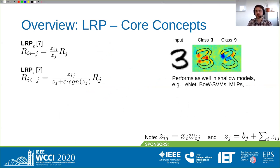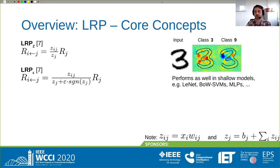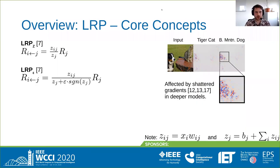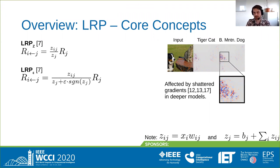The C rule has seen success in shallower models such as LeNet-like architectures, multi-layer perceptrons, or support vector machines and other arbitrary mappings which are potentially non-differentiable. However, with deeper models and especially ReLU-activated deep nets such as VGG, these two rules are affected by the so-called gradient shattering effect, which manifests as very noisy and high-frequency attribution maps in the input space.